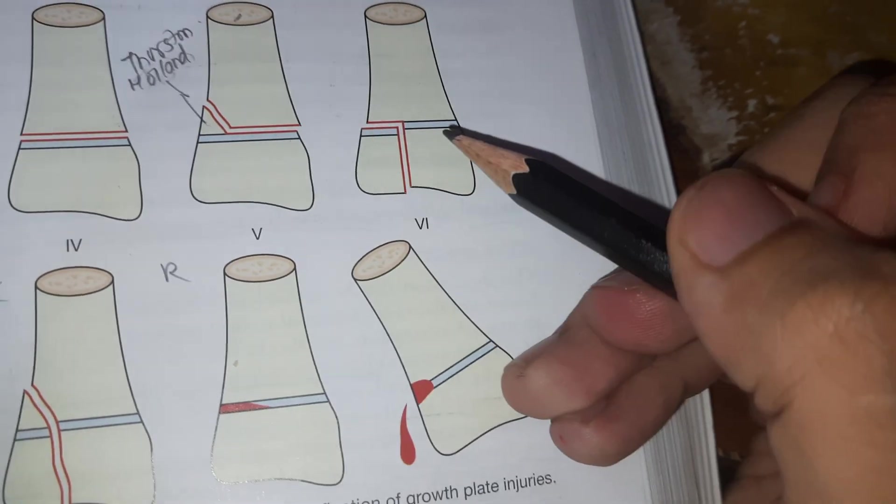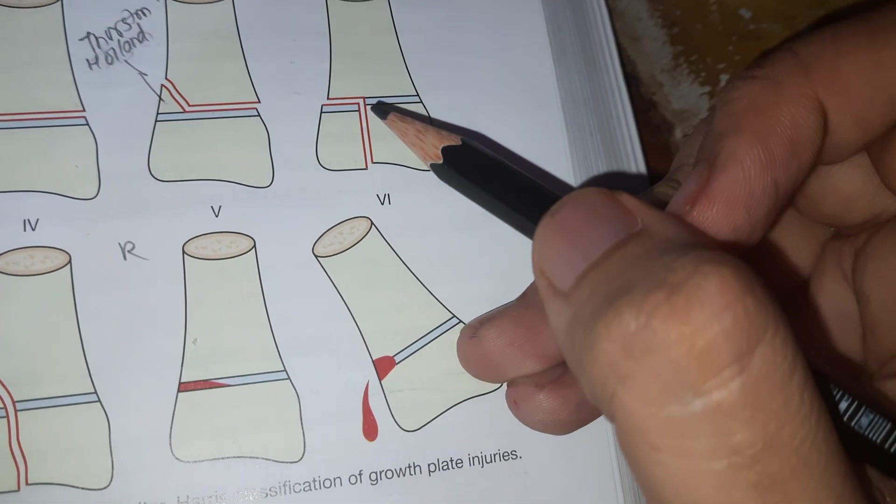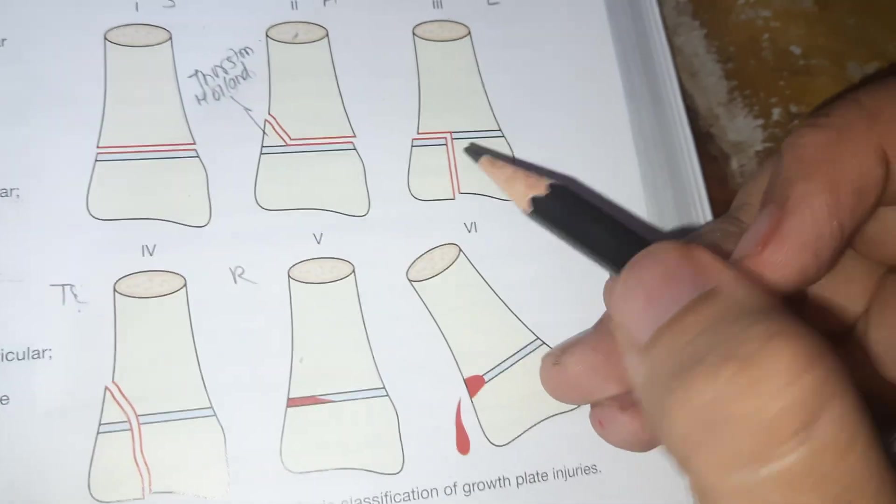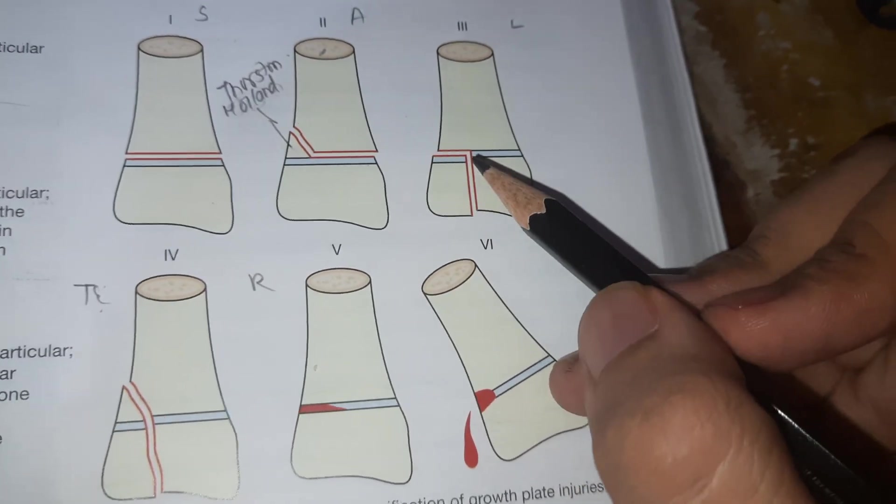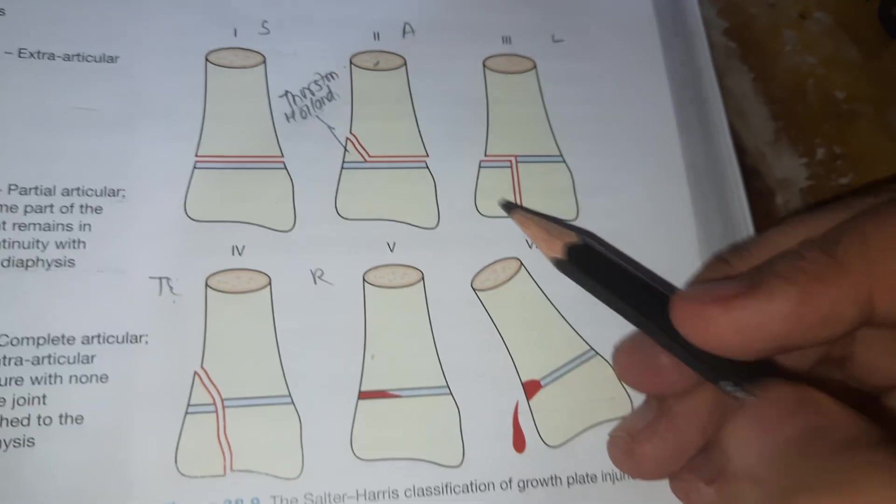This type is seen in fracture of lower end of tibia in children. The fracture line passes from below, so L for lower. This is above, this is below.